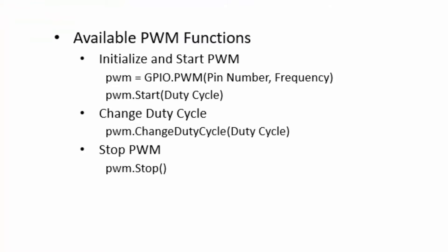Now I will update you with some of the PWM functions. Basically there are 4 functions. The first one is GPIO.PWM and it is used for configuring a pin as PWM at a particular frequency.